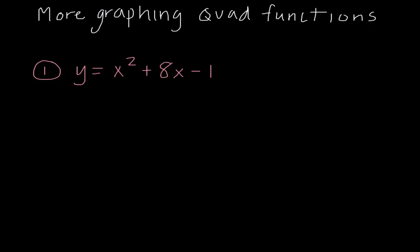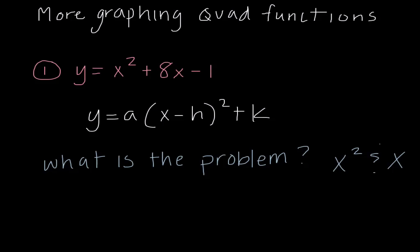We're going to go straight into example number one. Looking at y equals x squared plus 8x minus 1, this looks a little different than problems from our last lecture. You may remember our vertex form: y equals a times the quantity x minus h squared plus k. This is definitely not in vertex form — the problem is that we have both an x squared and an x term.